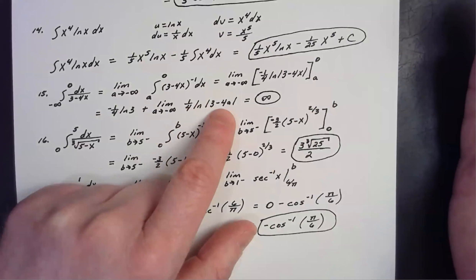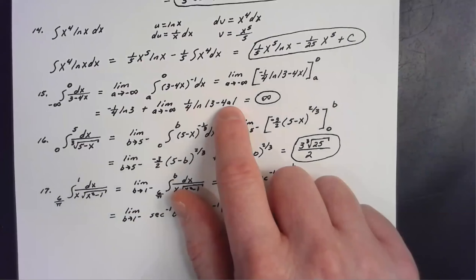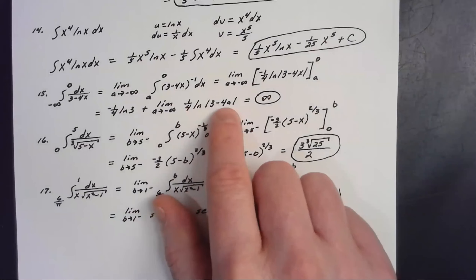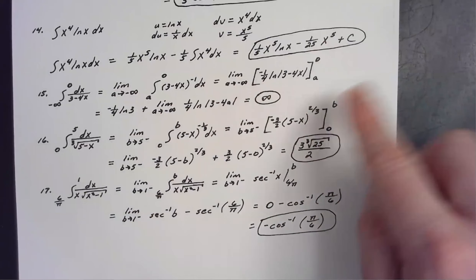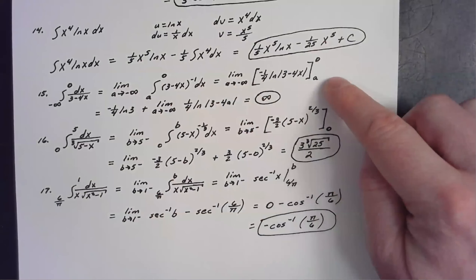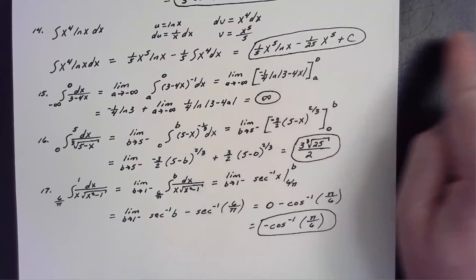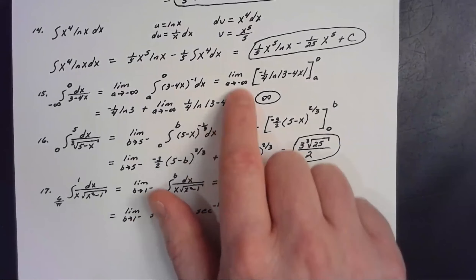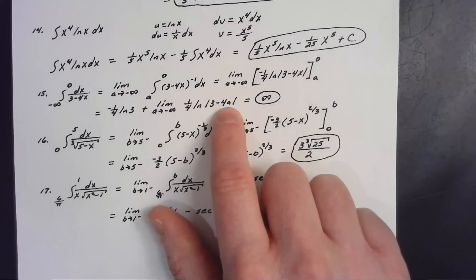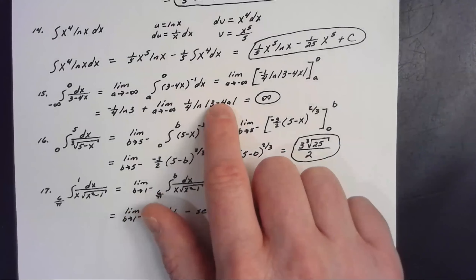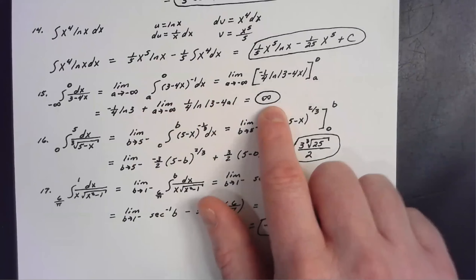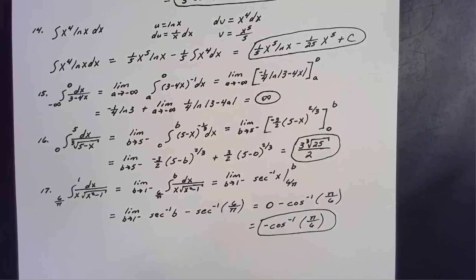Since ln(x) goes to infinity as x goes to infinity, we have 1/4 times infinity, which is still infinity. Infinity plus any finite number is infinity. So the answer is that the integral diverges to infinity.